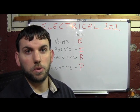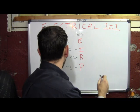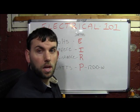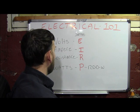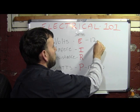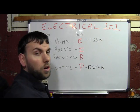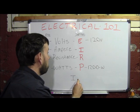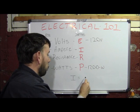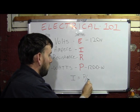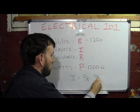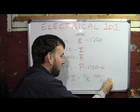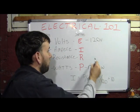Let's go a little further with Ohm's Law and actually calculate something. Say you have a toaster oven or microwave rated at 1200 watts, and the voltage you're plugging it into is 120 volts. We want to know how much amperage that's going to take. To calculate amperage — electrical symbol I — that equals wattage (P) divided by voltage (E). So 1200 divided by 120 equals 10. We are using 10 amps.